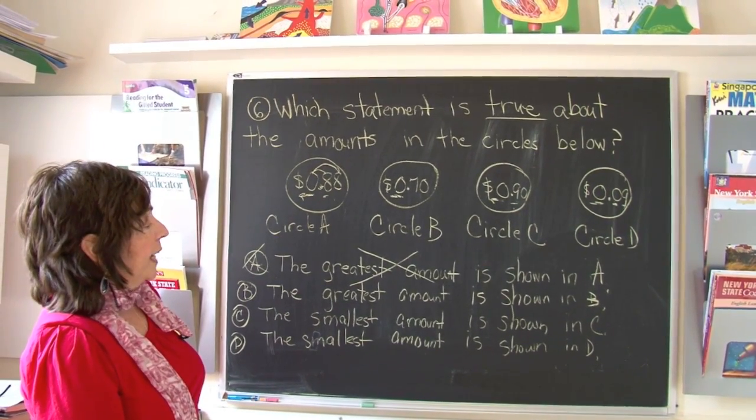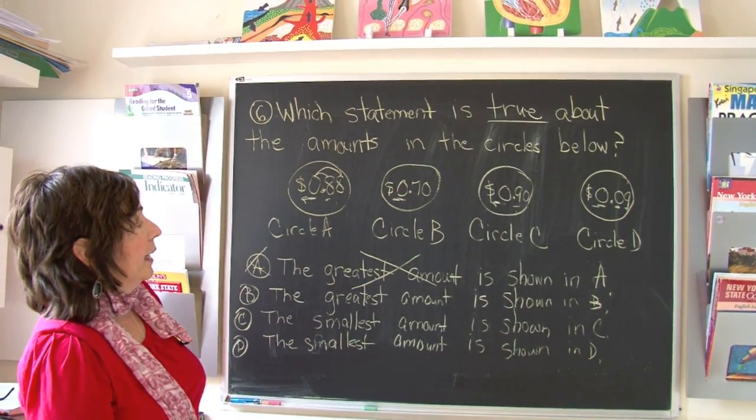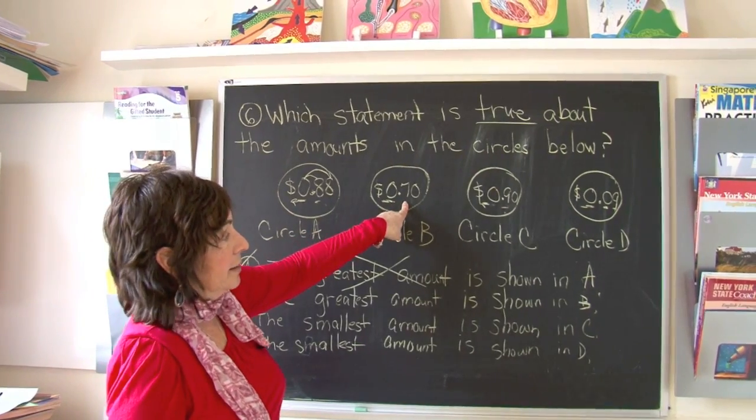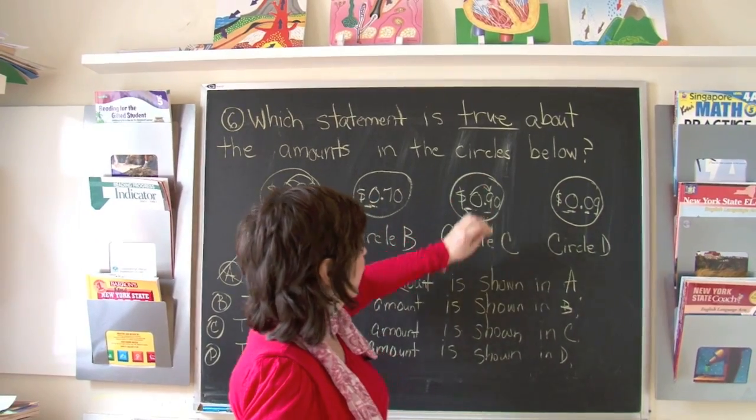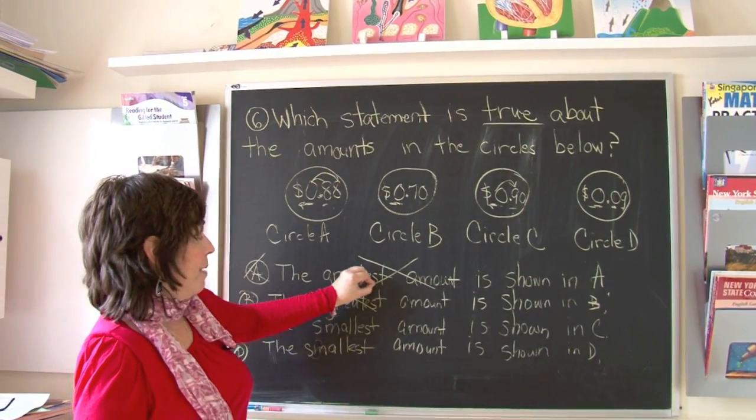Let's look at B. The greatest amount is shown in B. Seventy cents. So far, the greatest amount is the number with nine tenths, ninety cents. That cannot be correct.